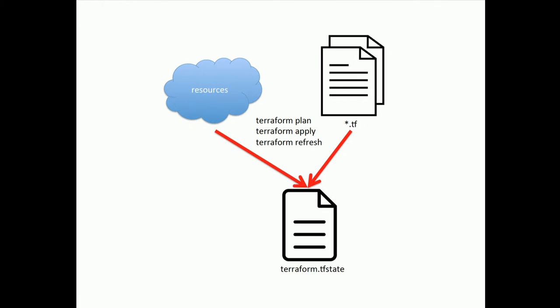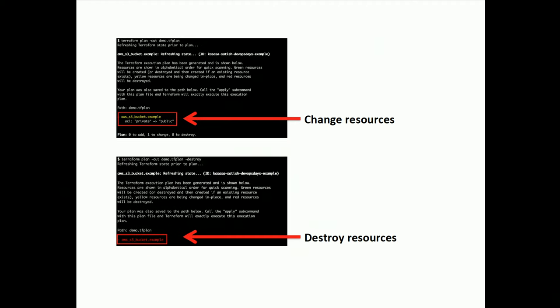The description of the plan and apply commands spoke about state. Terraform stores the state of the managed infrastructure since the last time Terraform ran in a state file. The state file is what allows Terraform to detect changes in configuration. This enables Terraform to apply incremental changes to the infrastructure and also to destroy the infrastructure that it manages.